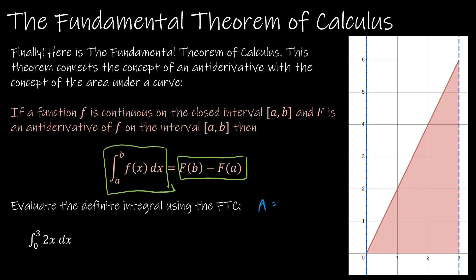We said this was obviously a triangle, and the base was 3 and the height was 6, so we took one-half times 3 times 6 to get an area of 9. So we know the answer is 9. Now let's take a look at how we can use the fundamental theorem of calculus for this.